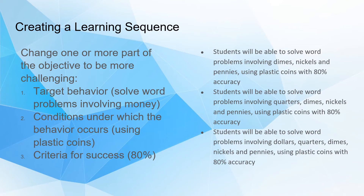Now you want to create a sequence of three lessons. If you've written your objective in this three-part system, this will be much easier because you change one or more of the three parts. In this example, only the target behavior changes. In lesson one, students solve word problems using dimes, nickels, and pennies. In lesson two, they solve problems involving quarters, dimes, nickels, and pennies — adding quarters makes it more challenging.